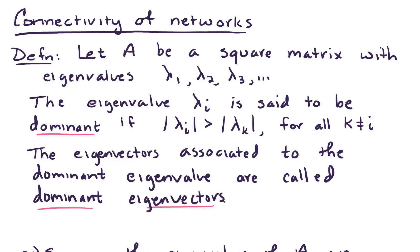In this video we're going to talk about the connectivity of networks. We'll begin with a definition. Let A be a square matrix with eigenvalues lambda_1, lambda_2, lambda_3, and so on. The eigenvalue lambda_i is said to be dominant if the absolute value of lambda_i is strictly greater than the absolute value of lambda_k for all k not equal to i. The eigenvectors associated to the dominant eigenvalue are called dominant eigenvectors. We are working with real eigenvalues in this course.